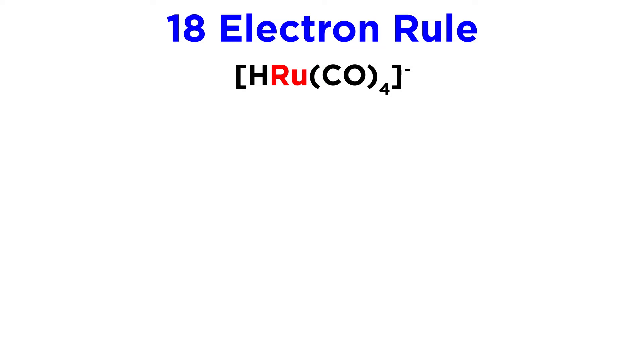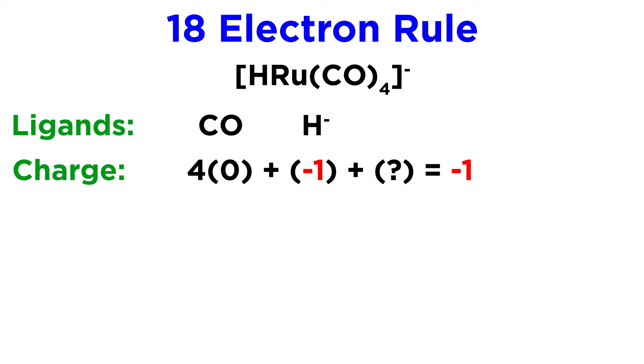First let's try this ruthenium complex. We have four carbonyls and a hydride, with a one minus charge on the complex. As always, let's start by separating the ligands. The carbonyls are neutral, and the hydride is one minus, so the one minus charge on the complex must be from this hydride, while the ruthenium atom is neutral.